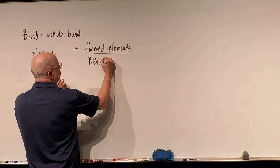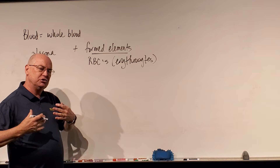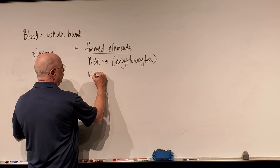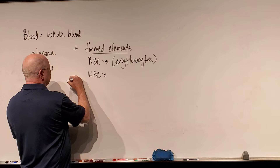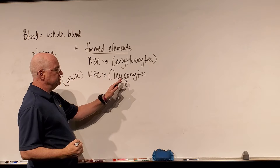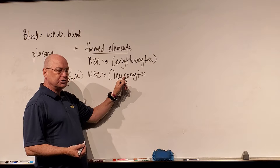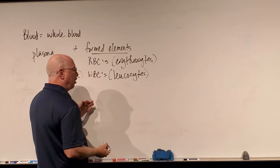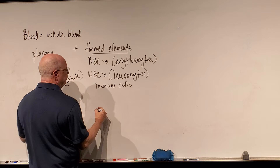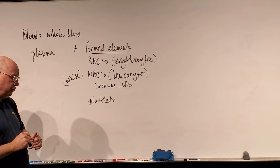The formed elements include what we call RBCs or red blood cells — erythrocytes. That's not part of your immune system; red blood cells simply carry dissolved gases from the tissues. What we're really worried about is the WBCs, or white blood cells. The technical term for our white blood cells is leukocytes — which can be spelled with a C or a K. The third component of formed elements is platelets, which are involved in clotting. We're going to focus on the leukocytes.